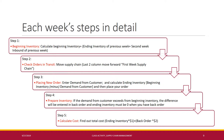In Step 4, prepare inventory: check if demand from the customer exceeds the beginning inventory. If so, the difference will be entered as back order and ending inventory must be recorded as zero when you have a back order. In Step 5, calculate the total cost by taking into account the ending inventory cost and the back order cost — each ending inventory item is $1 and each back order item is $2.